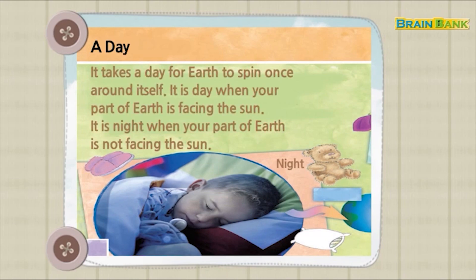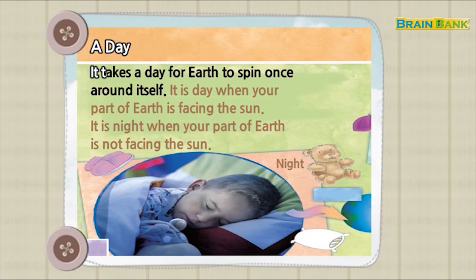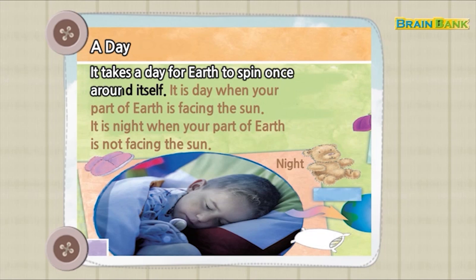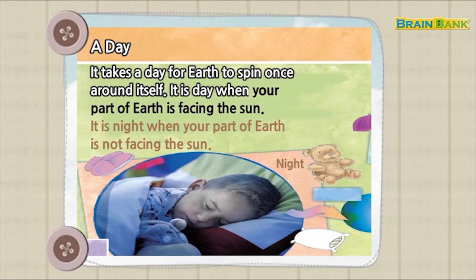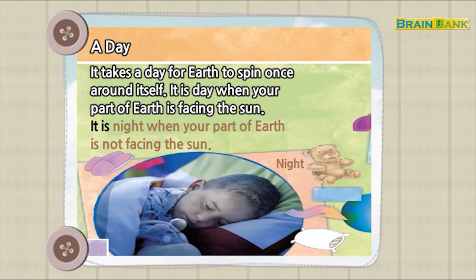A day. It takes a day for Earth to spin once around itself. It is day when your part of Earth is facing the sun. It is night when your part of Earth is facing away from the sun.